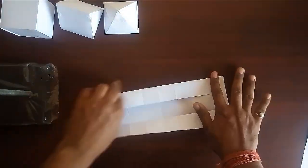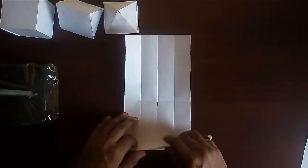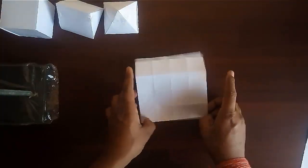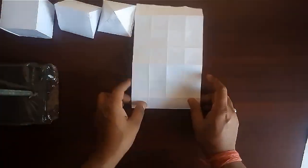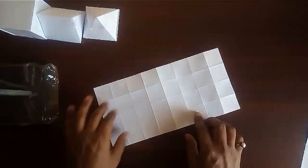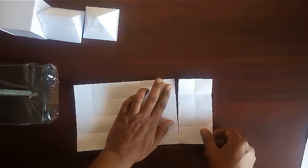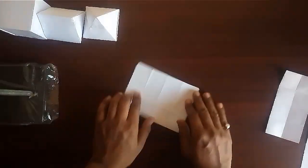Press the creases with your nails to make them clear. Now remove two strips of four squares. We need only 24 squares.